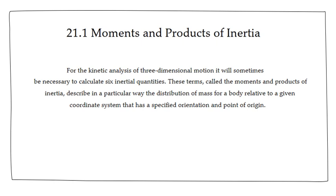First we look at moments and products of inertia — inertia being the tendency of a body to resist motion when subjected to a force. When studying rigid bodies in detail, we get into six different types of inertia quantities: moments and products of inertia.